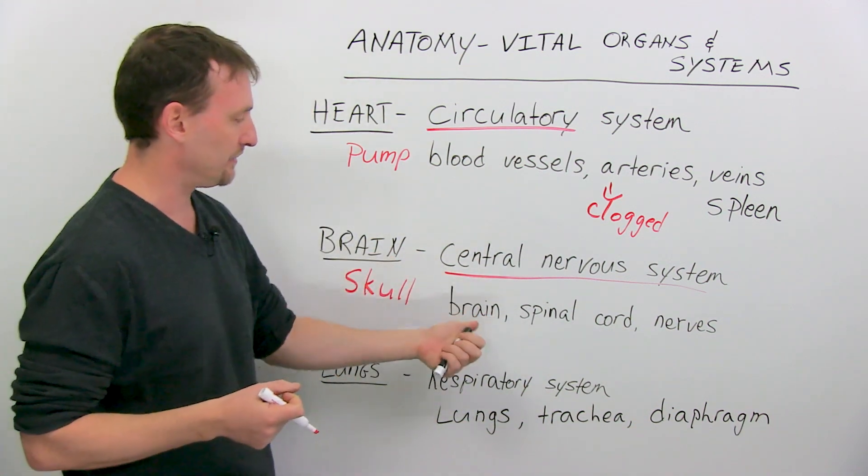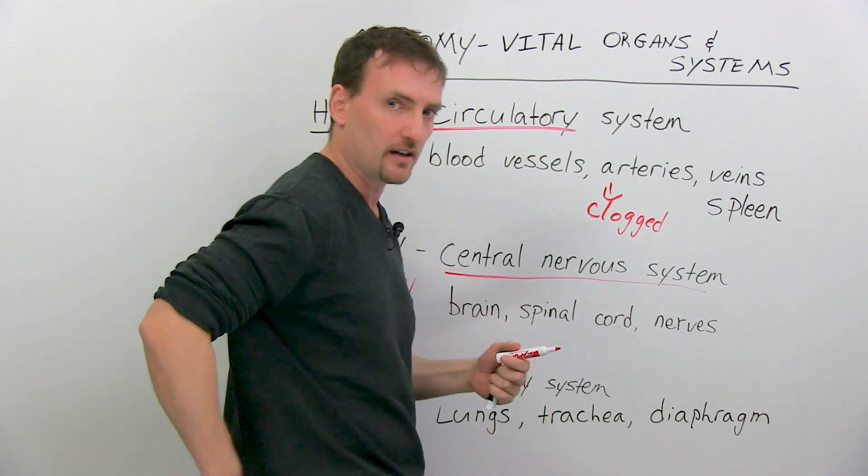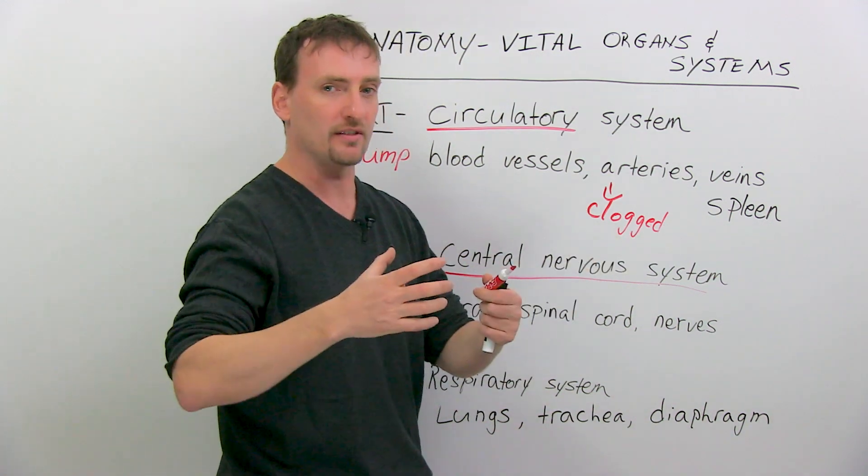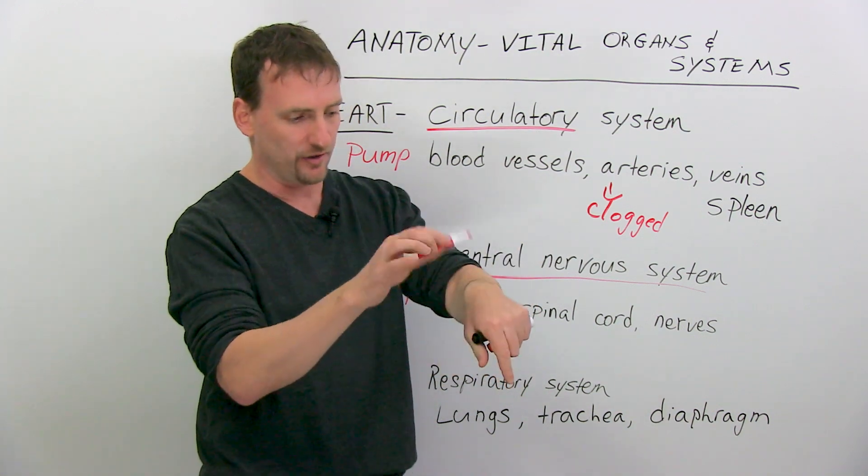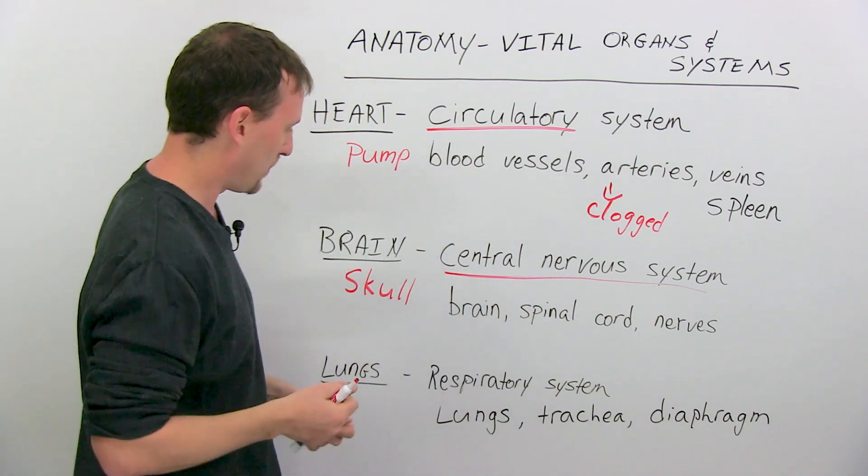The central nervous system consists of the brain, again. The spinal cord - that's the line in your back - it's connected all the way up, keeps your skeleton all together. And the nerves. The nerve endings on all parts of your body. So if you go like this, you feel it here, but you understand it here.